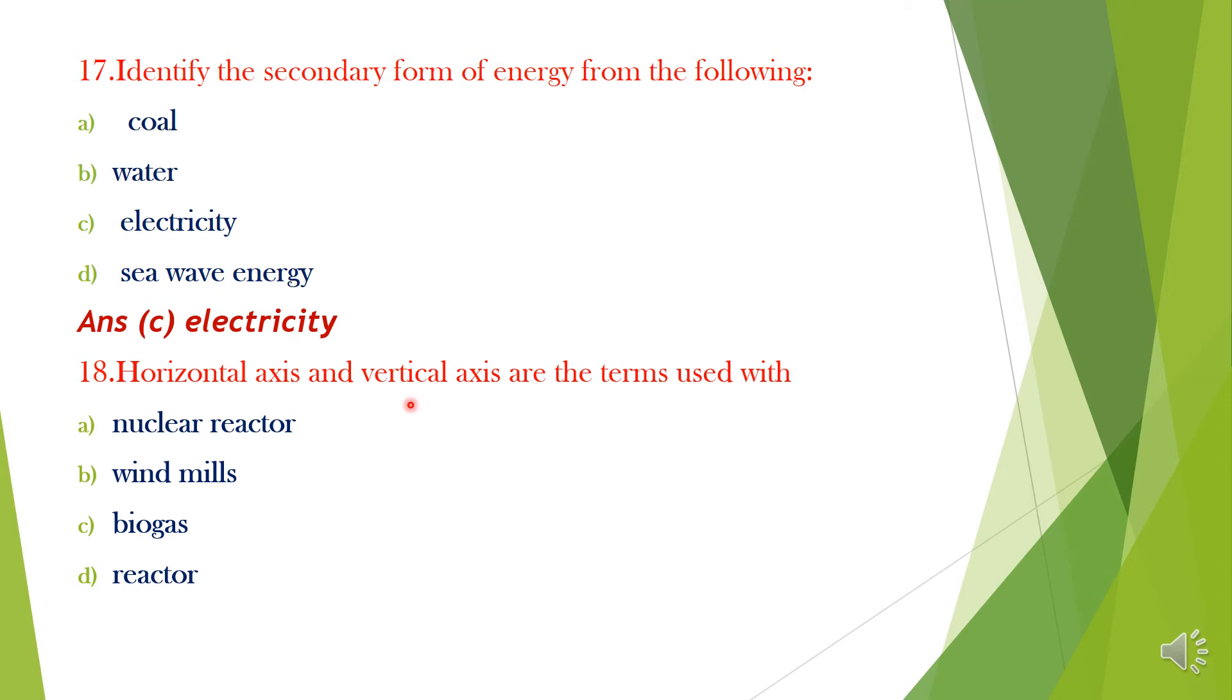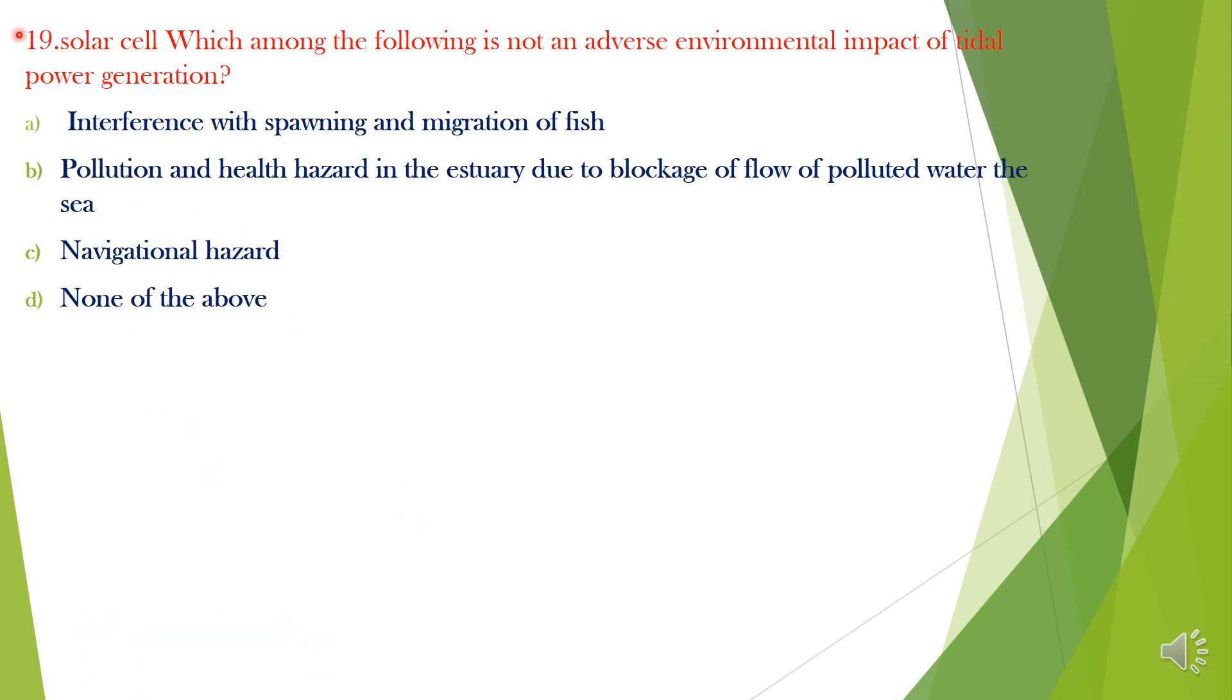Question 18. Horizontal axis and vertical axis are the terms used with: A. Nuclear reactor, B. Windmills, C. Biogas, D. Reactor. Answer is Option B, Windmills.